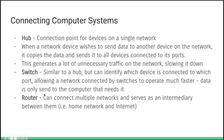A switch allows us to send data from one individual computer to another. So if you've got six computers in a network, you can send data from computer A to computer B — much more efficient. A router allows us to connect multiple networks to each other, stitching networks of computers together to create larger networks.